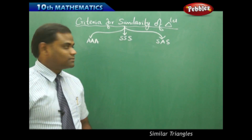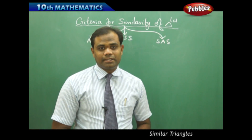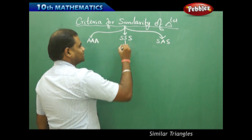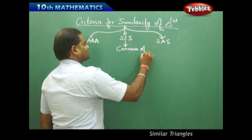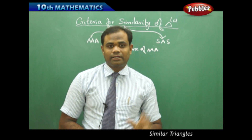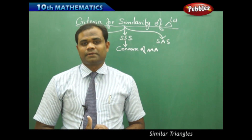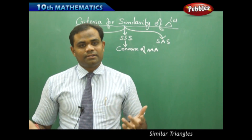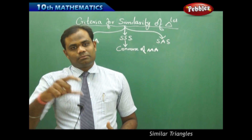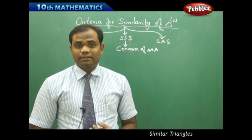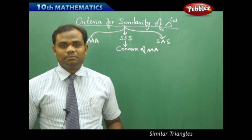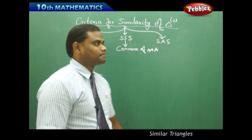Now next is the SSS criterion. The SSS criterion is said to be the converse of the AAA criterion. The AAA criterion stated that if the corresponding angles of one triangle are equal to the corresponding angles of the other triangle, then the two triangles will have their sides in the same ratio. Conversely, here we assume that the corresponding sides of one triangle are proportional to the corresponding sides of the other triangle, and then we prove that the corresponding angles are equal, and finally that the two triangles are similar.